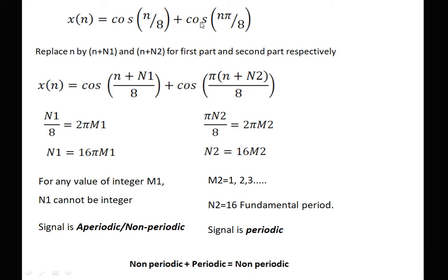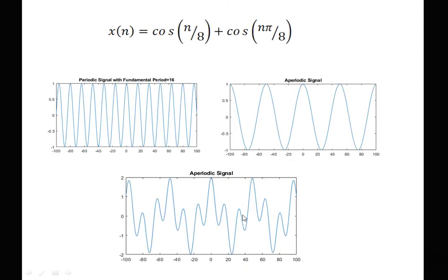Next: x(n) = cos(n/8) + cos(πn/8). The signal has two parts, so we assign N₁ to the first and N₂ to the second. For the first part, N₁/8 = 2πm₁ gives N₁ = 16πm₁, which cannot be an integer — so the first part is aperiodic. For the second part, πN₂/8 = 2πm₂ gives N₂ = 16m₂, which is a positive integer with fundamental period 16. Since one part is aperiodic and one is periodic, the combined signal is non-periodic in nature, as confirmed by the MATLAB graphical illustration.